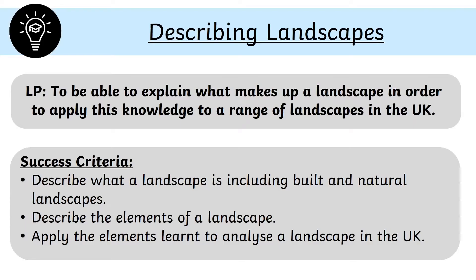The learning purpose is to be able to explain what makes up a landscape in order to apply this knowledge to a range of landscapes in the UK. The success criteria is to describe what a landscape is including built and natural landscapes, describe the different elements of a landscape, and apply the elements learnt to analyse a landscape in the UK.